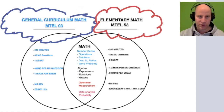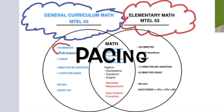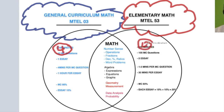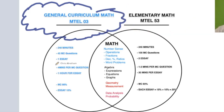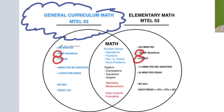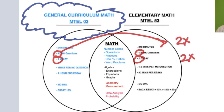Let's start with the timing. Both are four-hour exams. The general curriculum 03 has 45 multiple choice questions and one essay, whereas the 53 has 100 multiple choice and two essays. So on the 53 you have double the multiple choice and double the essays, which makes it a much harder exam in terms of pacing.